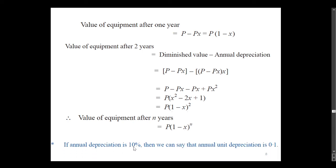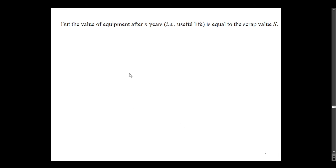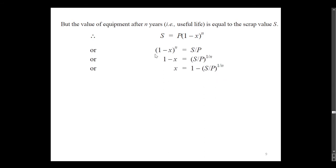If the annual depreciation is 10%, then the annual unit depreciation X is 0.1. The value of the equipment after N years equals its salvage or scrap value S. Therefore, S = P(1 - X) raised to N, which gives (1 - X) raised to N equals S divided by P. Solving this, we get the expression X = 1 minus (S/P) raised to the power 1/N.